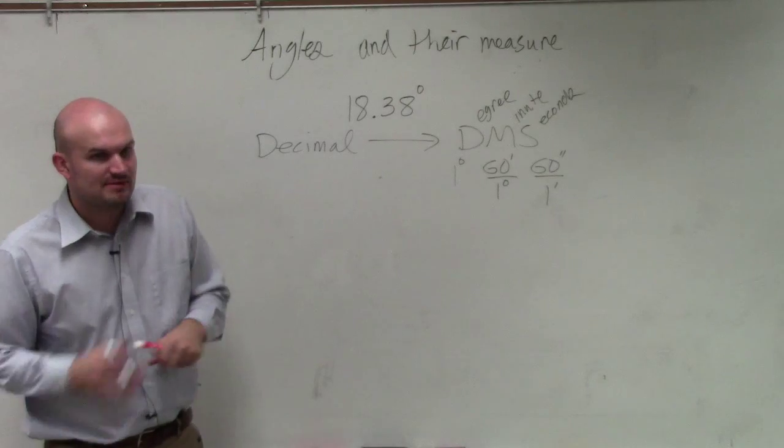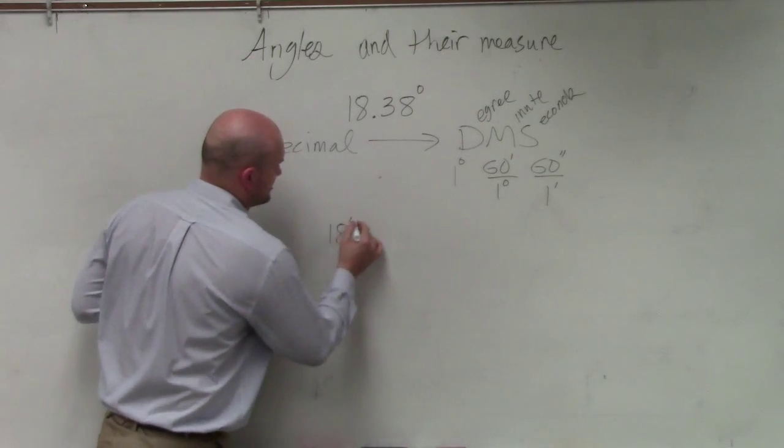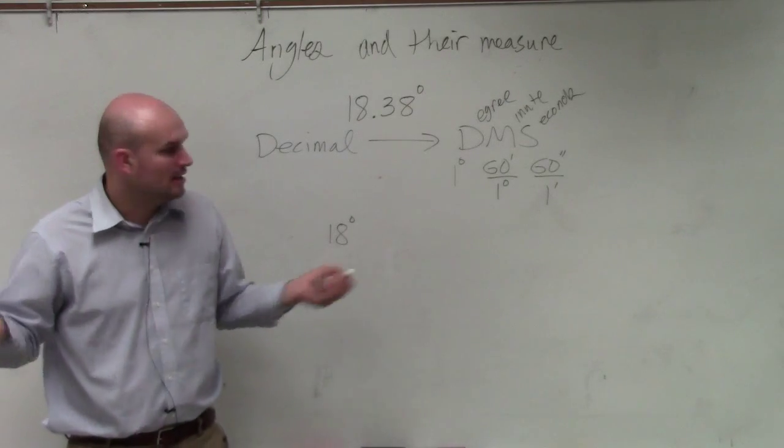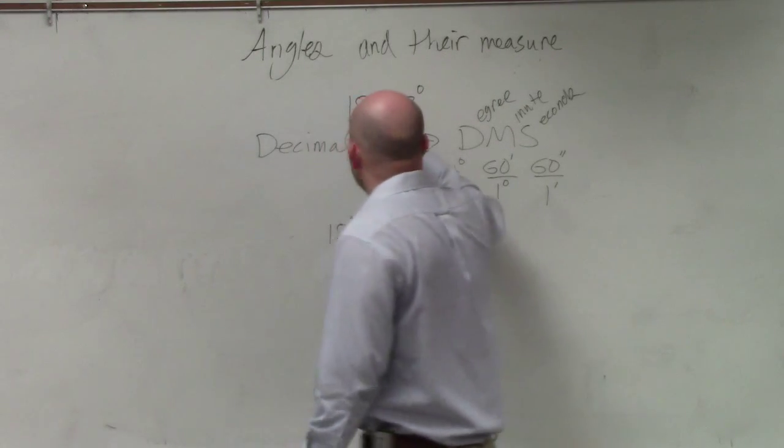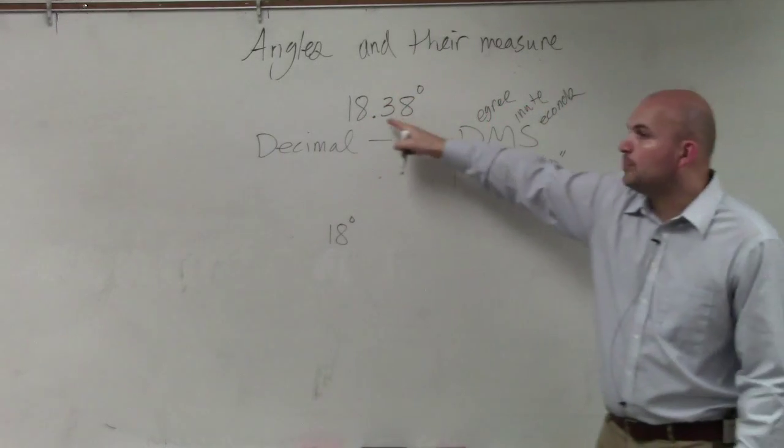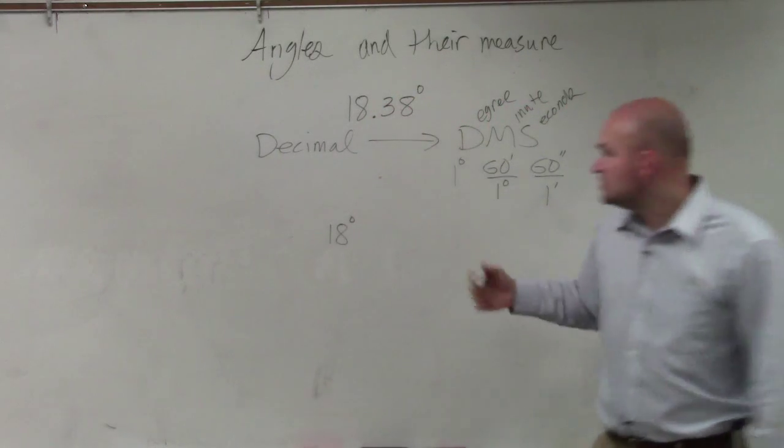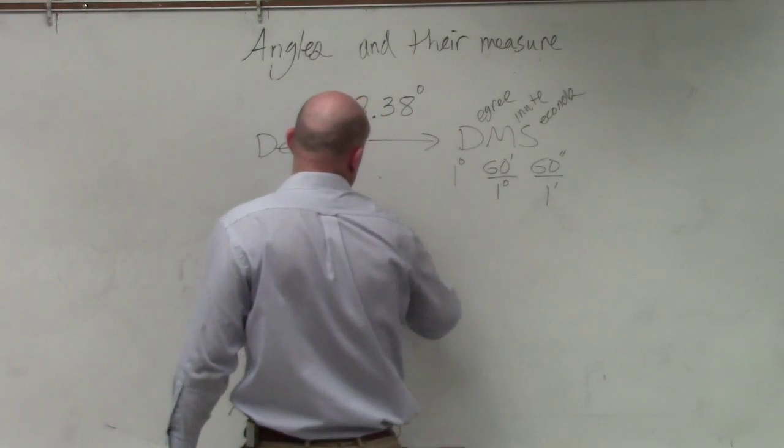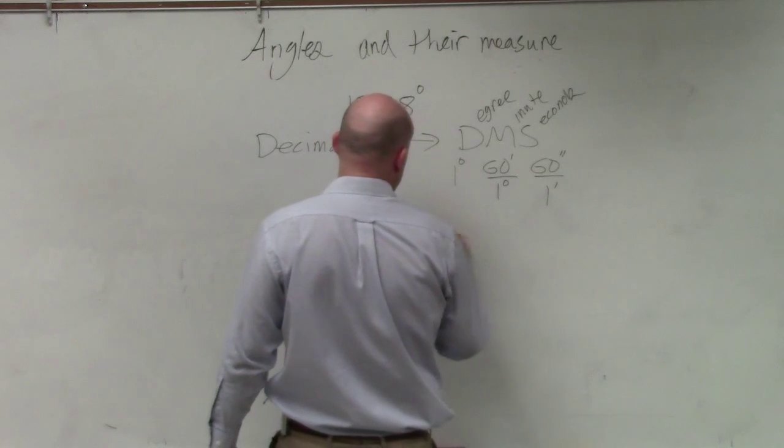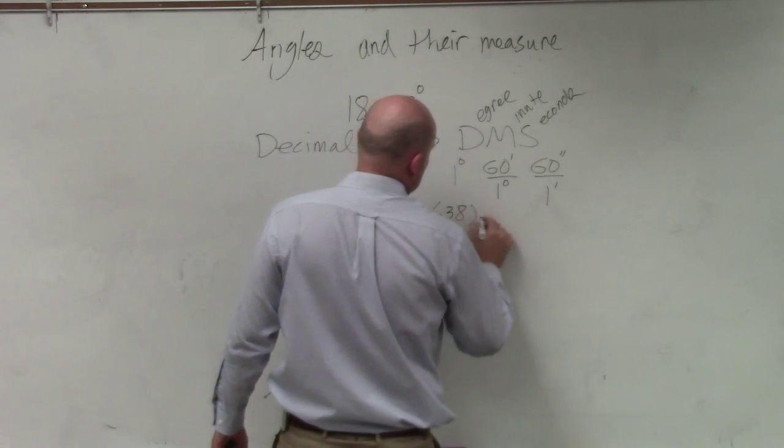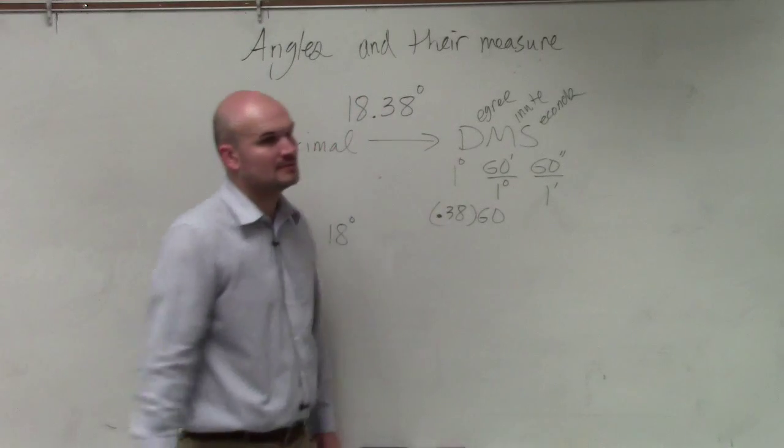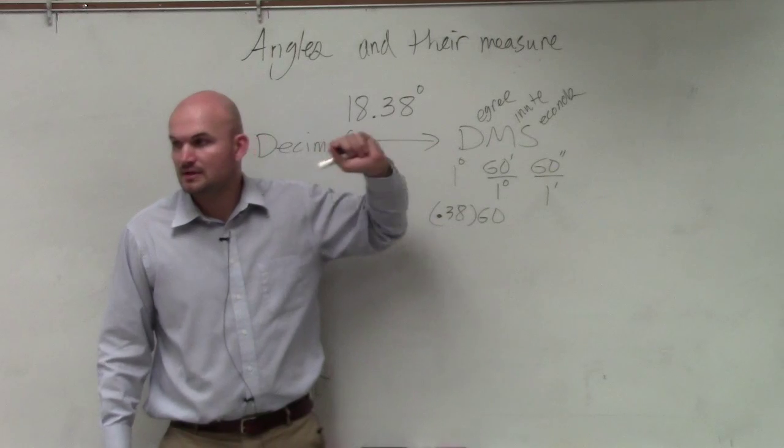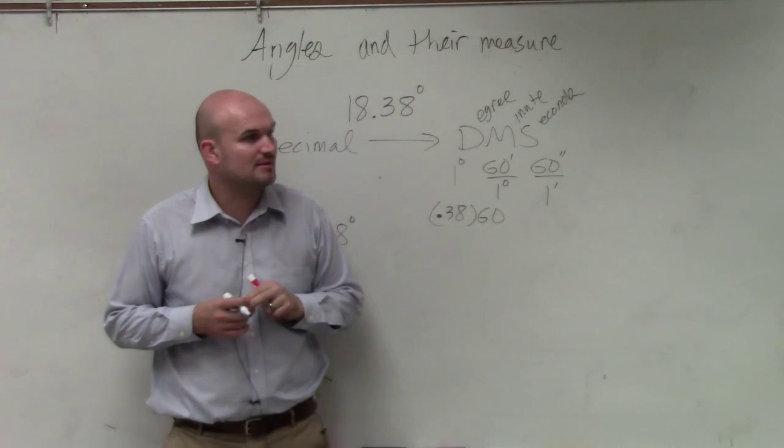So if I want to write this in terms of minutes and seconds, we know that there's 18 degrees. That's a given. However, we need to figure out how many minutes are there. So we have 0.38 of a degree. So to find my minutes, I'm going to do 0.38 times 60. That's going to denote minutes and seconds. So if somebody does 0.38 times 60, could they tell me what they get?